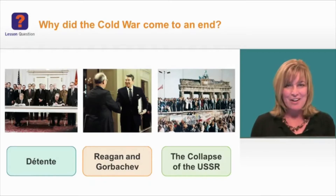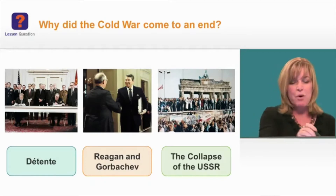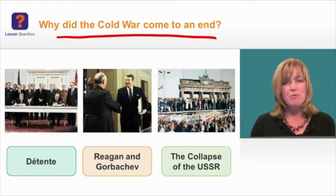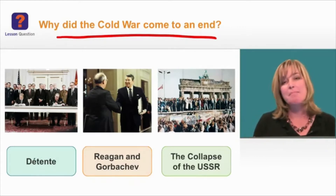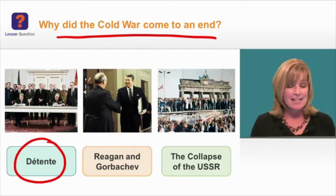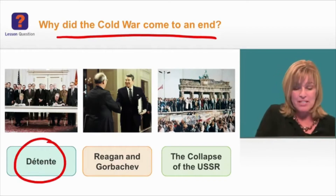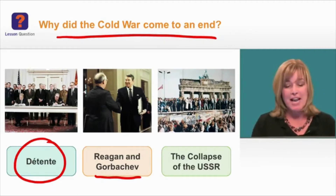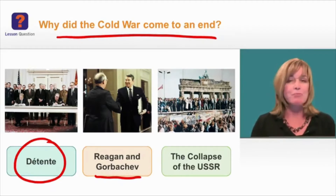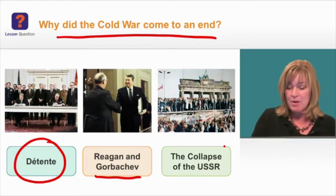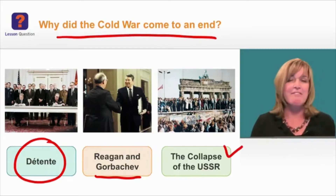Now let's take another look at our lesson question: why did the Cold War come to an end? To answer this question, we're going to divide it up into two parts. First, we're going to learn more about the policy of detente. Then we're going to learn about two of the leaders of the Cold War as it came to an end: President Ronald Reagan and Soviet Premier Gorbachev. And then we're going to learn about the events leading to the collapse of the USSR.